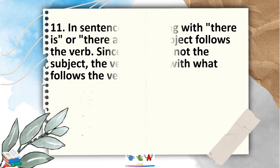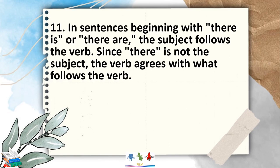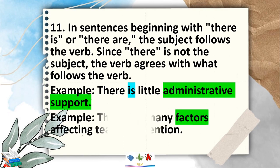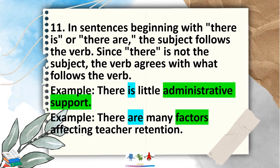Rule 11: in a sentence beginning with 'there is' or 'there are,' the subject follows the verb. Since 'there' is not the subject, the verb agrees with what follows it. For example, 'There is little administrative support.' The noun is 'administrative support,' which is singular, so it takes a singular verb: 'is.' Another: 'There are many factors affecting teacher retention.' The noun is 'factors,' which is plural, so it takes a plural verb: 'are.'